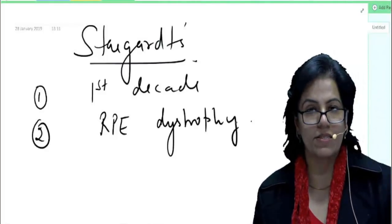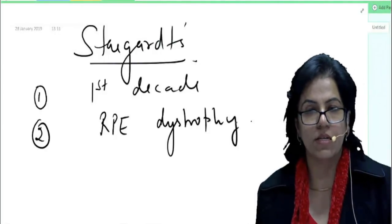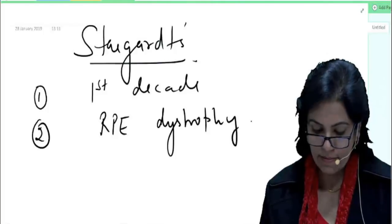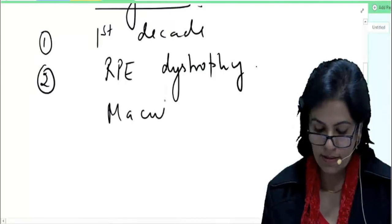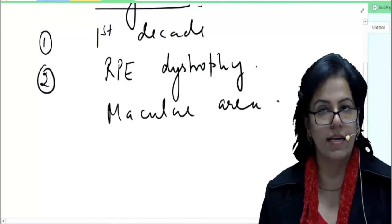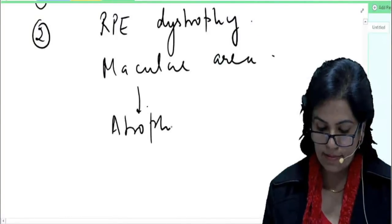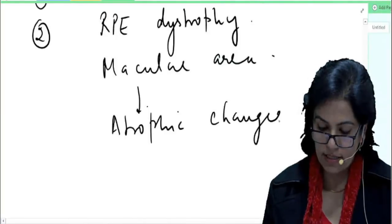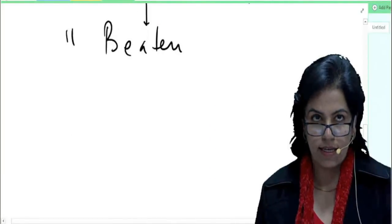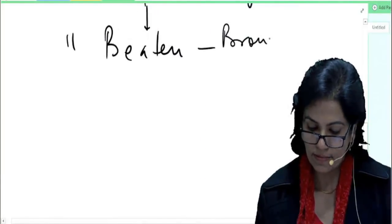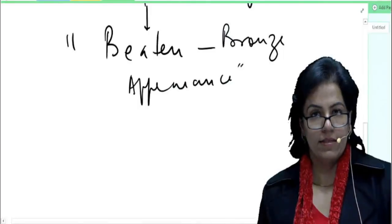And everybody remembers what is a dystrophy? Any idiopathic spontaneous change with no inflammatory component, that is what is dystrophy. So, Stargardt's mainly involves the macular area, predominantly involves the macular area. Slowly there will be atrophic changes. And typically after this, this is described as beaten bronze appearance.